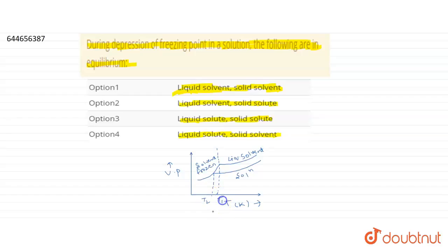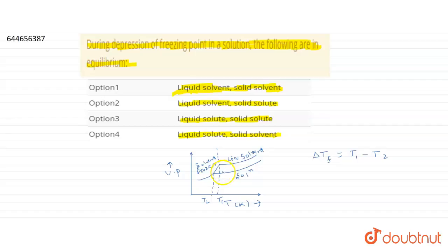Let us say this temperature is T2 and this temperature is T1. The depression in freezing point, delta Tf, will be T1 minus T2. When there is only pure solvent, the freezing point is T1. But when we add a non-volatile solute in the pure solvent, the freezing point of the solution decreases to T2.